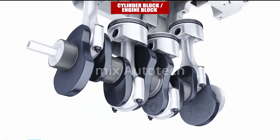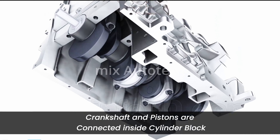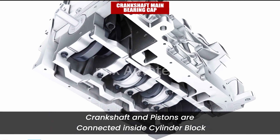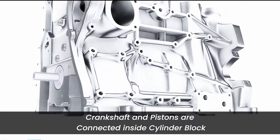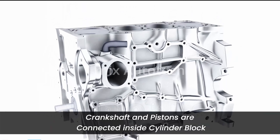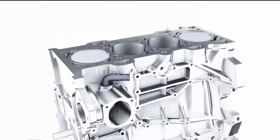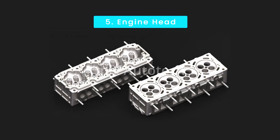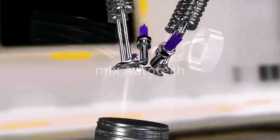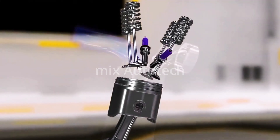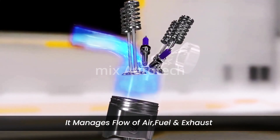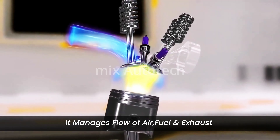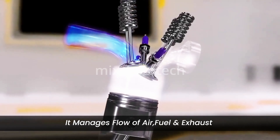The crankshaft and pistons are now connected inside the cylinder block. Next, the engine head — often called the brain of the engine. The cylinder head plays a critical role in managing the flow of air, fuel, and exhaust gases.